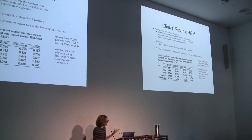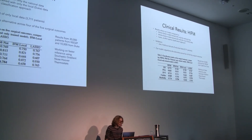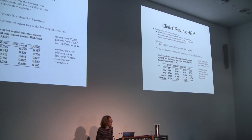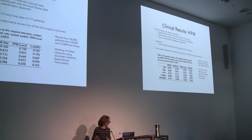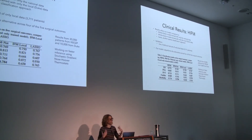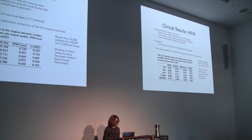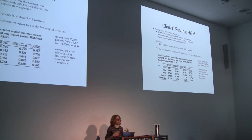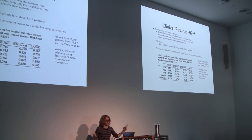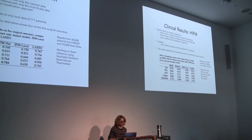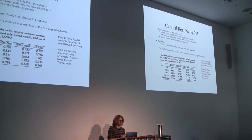We found that this kind of transfer learning was helpful for predicting complications. Compared to a model trained only on national data, a model trained only on local Duke data, and GLASSO or logistic regression, we did better in many cases. We're currently working on speeding up the inference using stochastic gradient MCMC sampling, since our national database is really large.